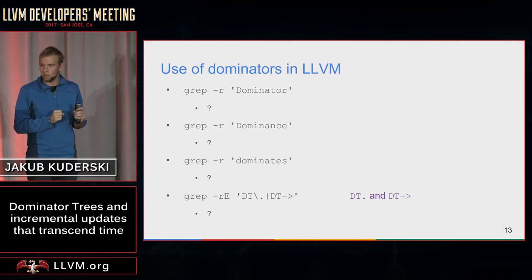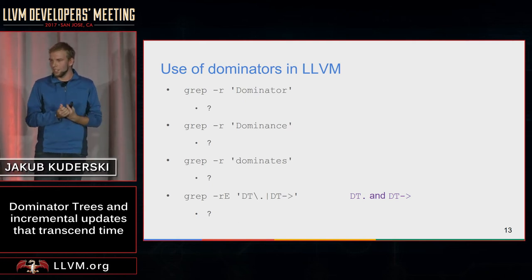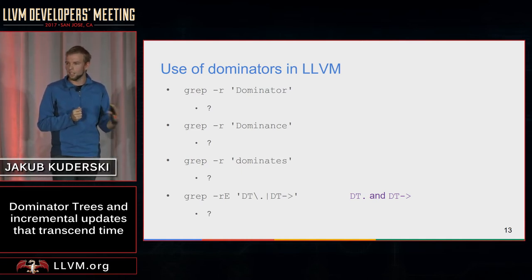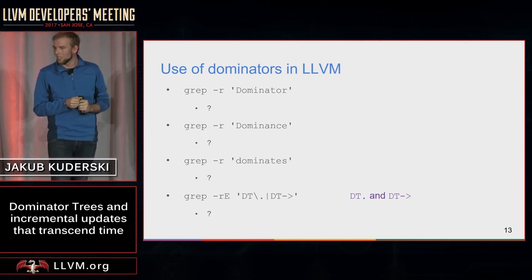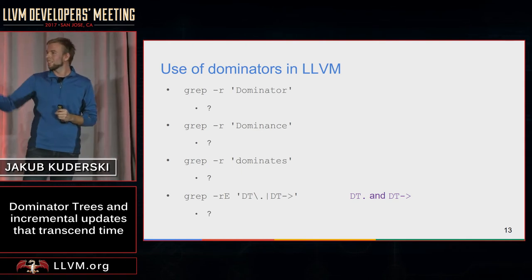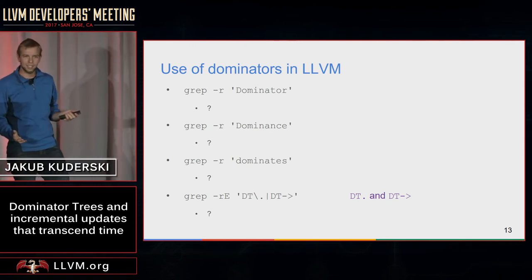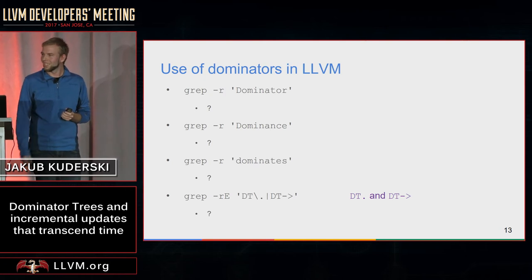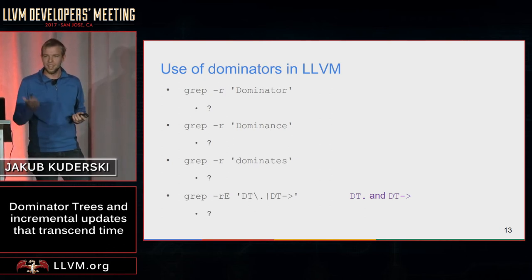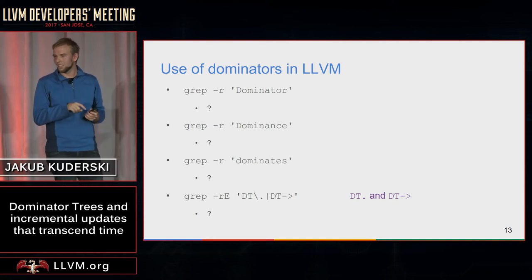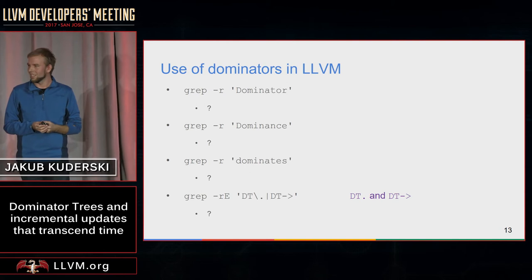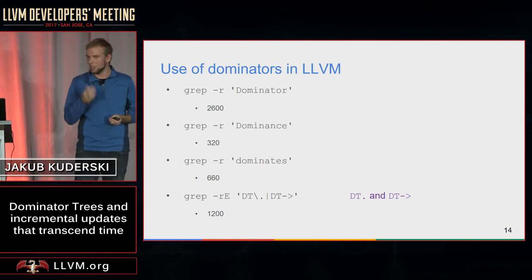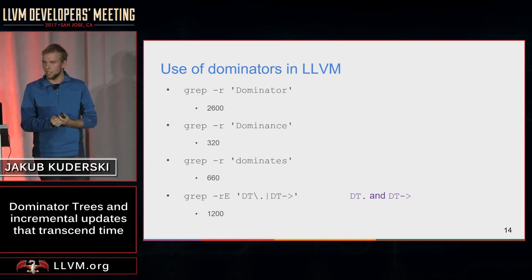Here's a small game: guess how many times each phrase appears in the whole LLVM codebase — searching recursively across LLVM, Clang, and Polly at the same time. 'Dominator' appears about 1,500 times. 'Dominance' appears about 200 times. 'Dominates' appears about 3,000 times. And 'DT.' or 'DT->' — access to the dominator tree — appears about 5,000 times. So dominators are a very widely used and commonly used tool in LLVM.